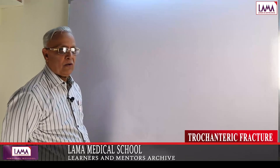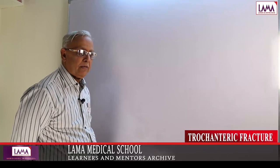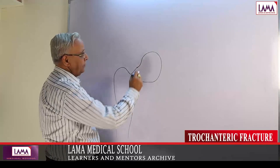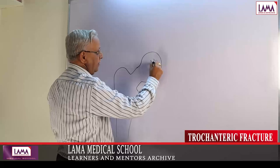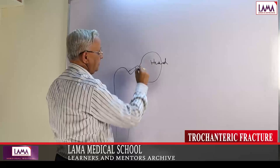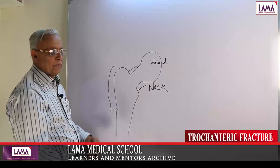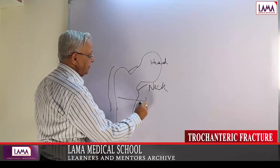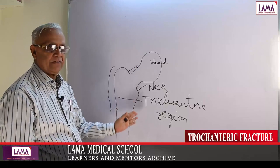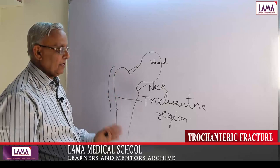Let us recall what is a trochanteric fracture and what is a fracture neck of femur, briefly, by this small line drawing. This is the head of the femur, and up to this it is the neck. From this region up to this region we generally call the trochanteric region. The entire line of treatment changes depending upon whether it is a fractured neck of femur or a trochanteric fracture.